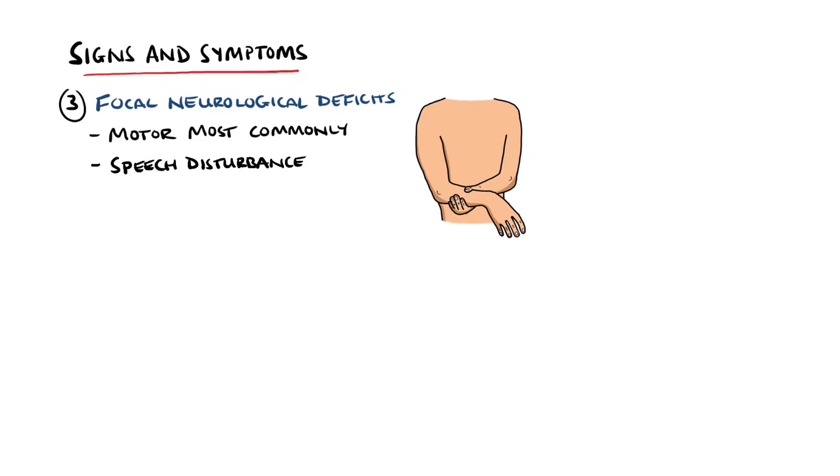especially when the left transverse sinus is involved. Cranial nerve deficits may also be present and may involve multiple cranial nerves. Ocular motor palsy, which is cranial nerve 3, or palsy of cranial nerves 4 and 6, can all result in diplopia, which is double vision.